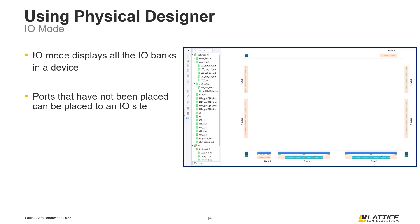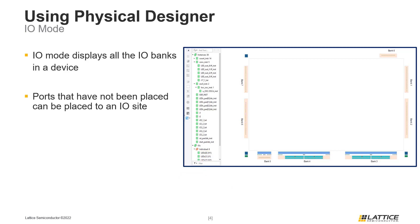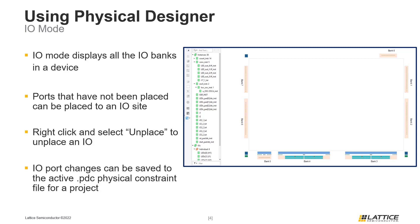Once a port has been placed to an I.O. bank, the location of its site will appear next to a port's name in parentheses. From the figure on the slide, it can be seen that the port LED0 was placed to the site H1. I.O. mode can also be used to unplace an I.O. port from where it was placed during place and route. To remove an I.O. port, right-click the name of the I.O. port from the list of instances and select Unplace from the drop-down list of options. The site location next to a port's name should disappear from the list of instances, indicating that the port was successfully unplaced. If any changes were made to the placement of I.O. ports, those changes can directly be saved to the active PDC physical constraint file for a project using the save icon or keyboard shortcut Ctrl-S.